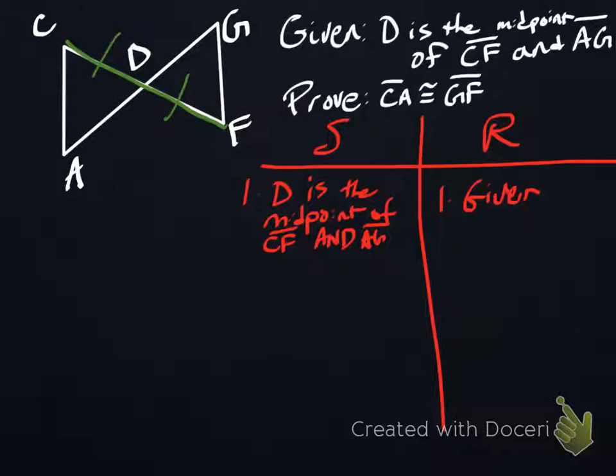So notice that that statement, CD congruent to FD, is not given, right? So we can say it, and we have reason for saying it, and I'll explain what I mean by that in just a moment.